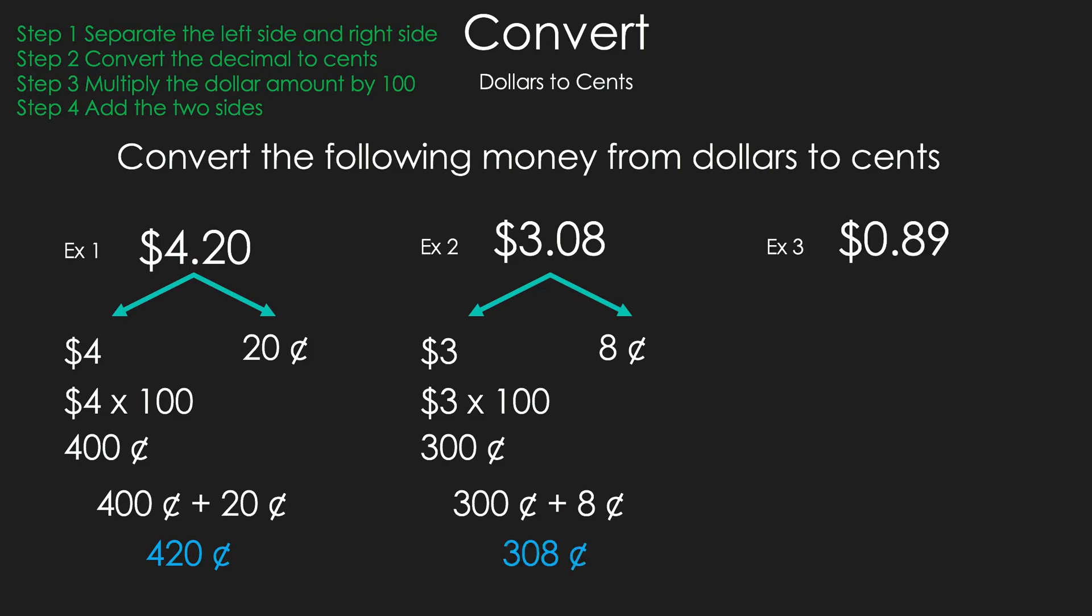Take a look at example 3. We have $0.89. We're going to do Steps 1 and 2 at the same time. Now we're going to multiply 0 by 100. And remember, anything times 0 is just 0. So we have 0 cents for your dollars. And then now we have 89 cents on the right-hand side. And now we do Step 4, which is add them, and we get 89 cents as your answer.